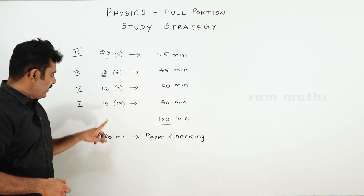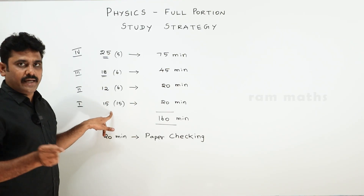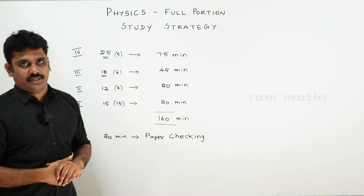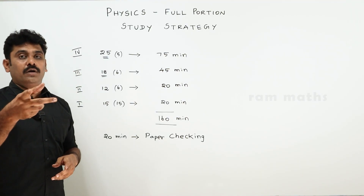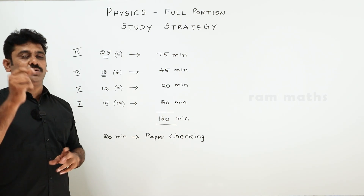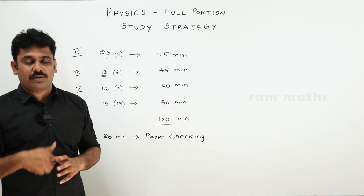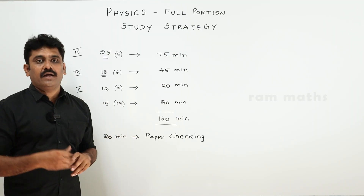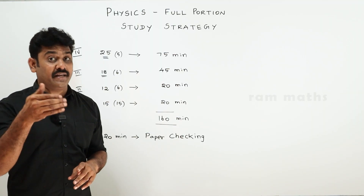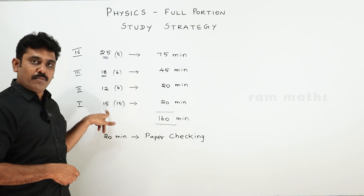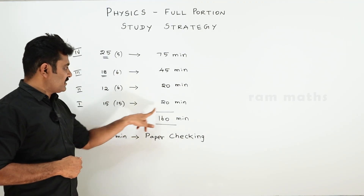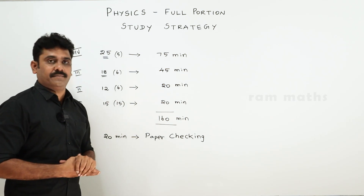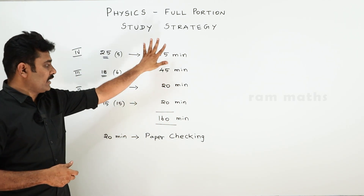For the 1-mark section, 15 × 1 mark: 8 to 10 questions come as per the book back. From the remaining 7 questions, 1 or 2 may be modified book-back questions — for example, changing a parallel circuit question. The remaining 5 are creative questions based on theory concepts. Allocate 8 minutes for book-back 1-mark questions and 12 minutes for the remaining 7. Complete the entire 1-mark section in 20 minutes.